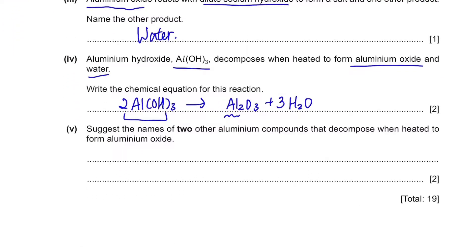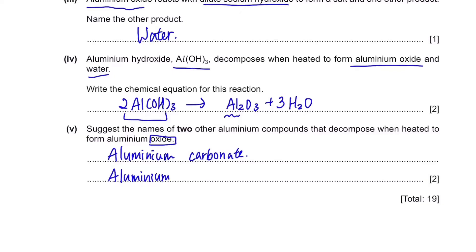Suggest the names of two other aluminium compounds that decompose when heated to form aluminium oxide. We've learned that carbonates and nitrates decompose to produce the metal oxide, so the answers are aluminium carbonate and aluminium nitrate.